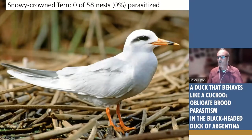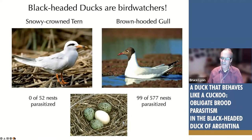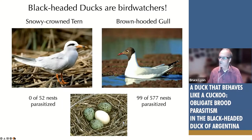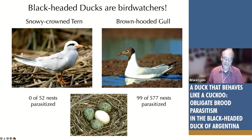The snowy-crowned tern is a fascinating case — we never found a duck egg in a tern nest, even though terns nest mixed in colonies with brown-hooded gulls. Gulls right next to tern nests were often parasitized while the tern nest beside it was not. Both birds are very aggressive defenders. One explanation is that the ducks are good bird-watchers: terns are probably too small to effectively incubate a duck egg, whereas gulls are much larger. So the ducks may be really good at telling a good host from a potentially bad one — a testable idea for the future.